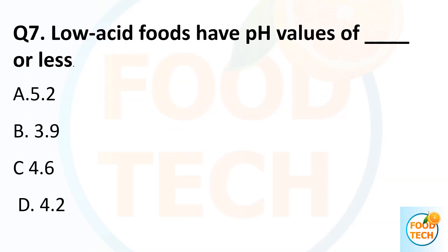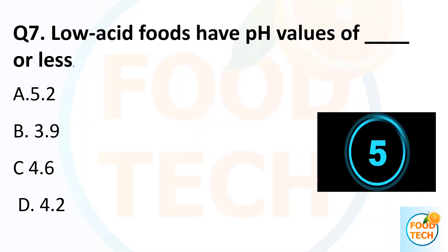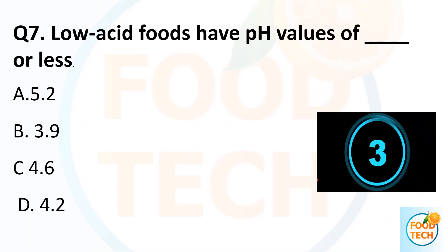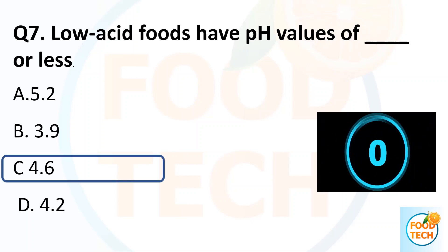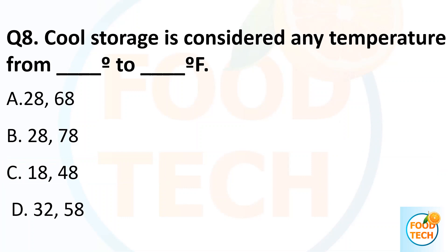Question 7. Low acid food has a pH value of dash or less. A. 5.2. B. 3.9. C. 4.6. D. 4.2. Answer C. 4.6.